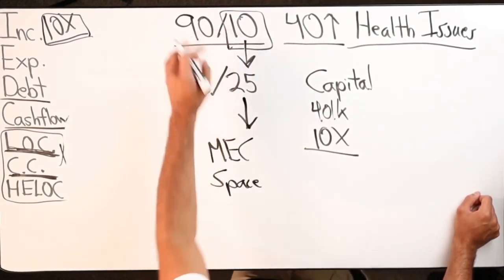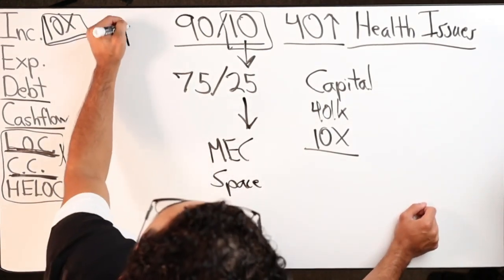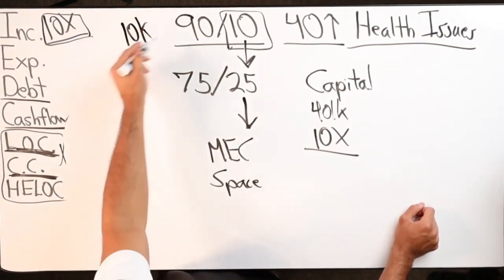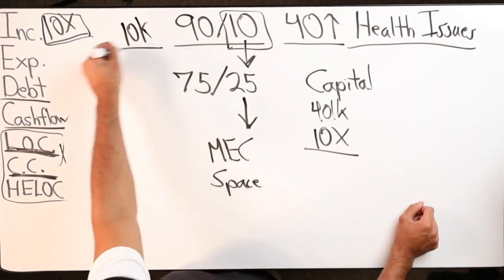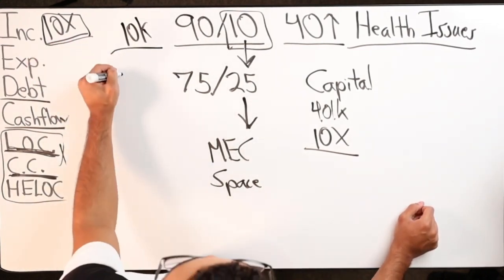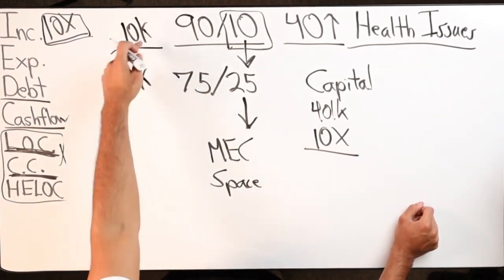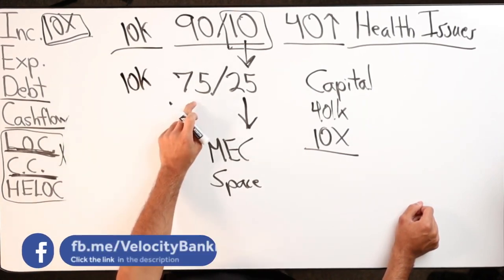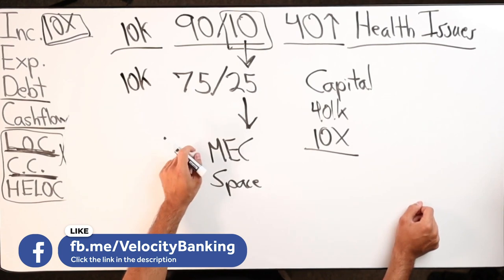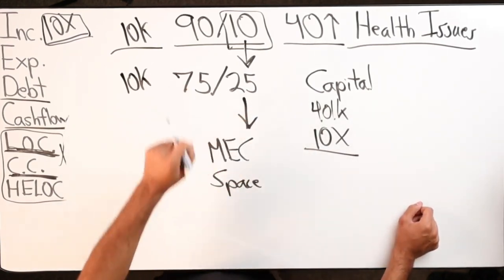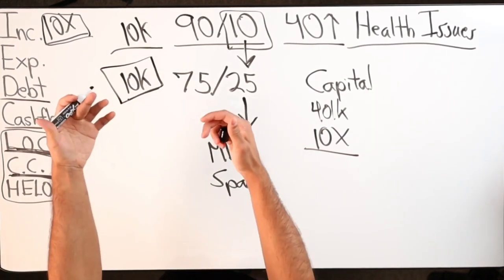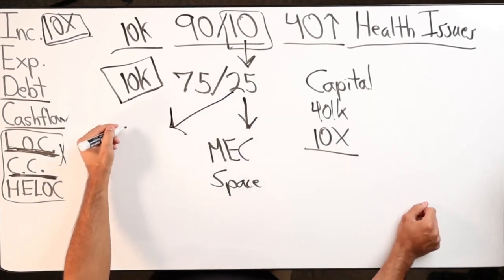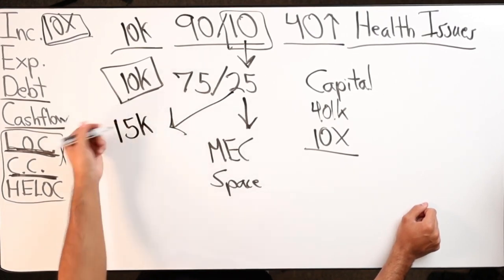So if I was putting in $10,000 a year into a policy, $9,000 goes towards cash, $1,000 goes towards the premium. That means I can only put in 10k a year. But if I do the same thing over here, the same $10,000, 75% goes towards cash value and then $2,500 goes towards premium. That means that day one, that person could start with $10,000, but then throughout the year, they put in another 15k for a total of $25,000.